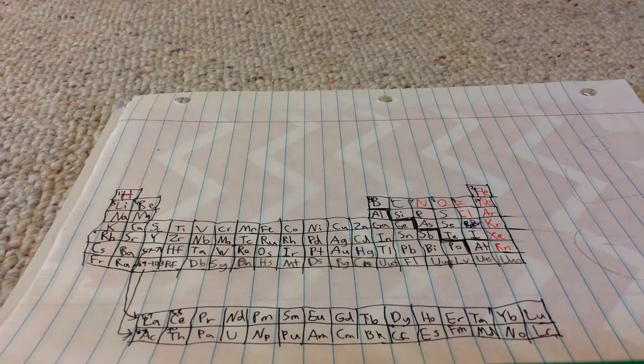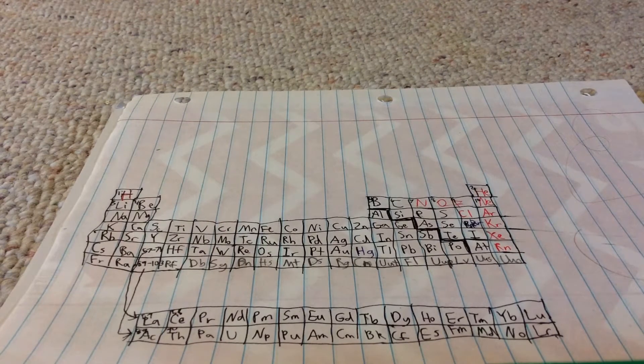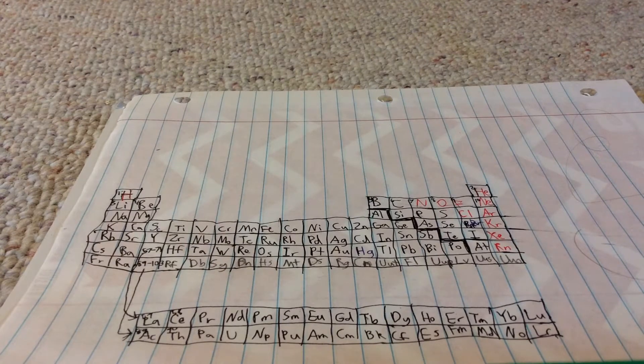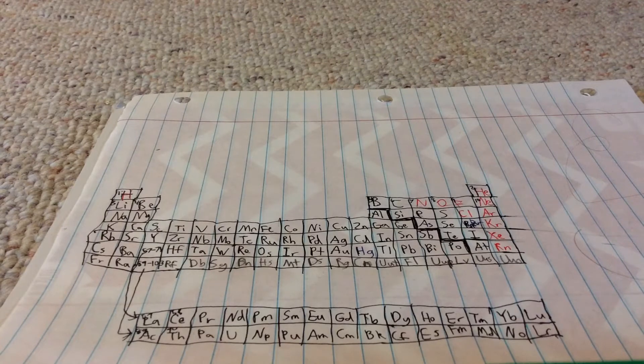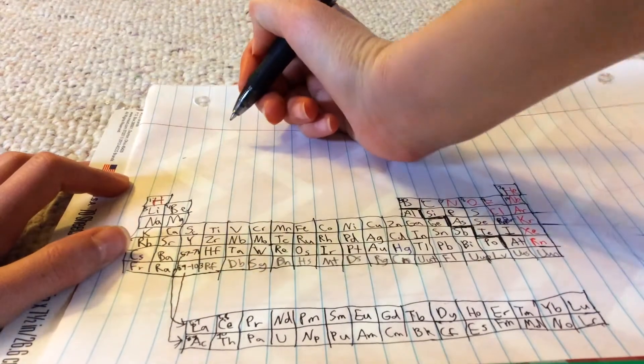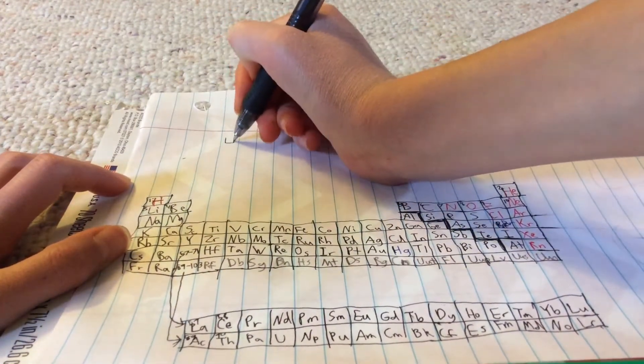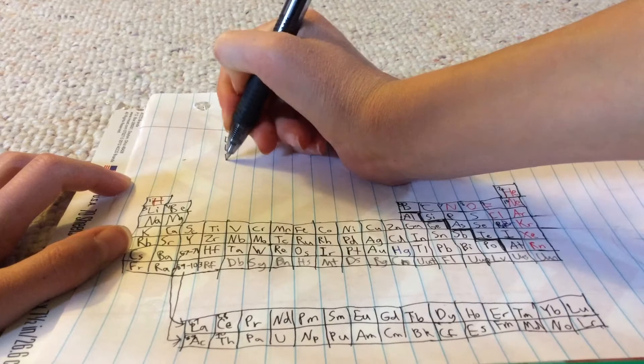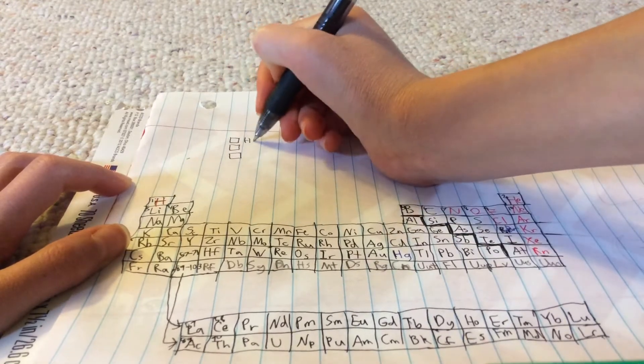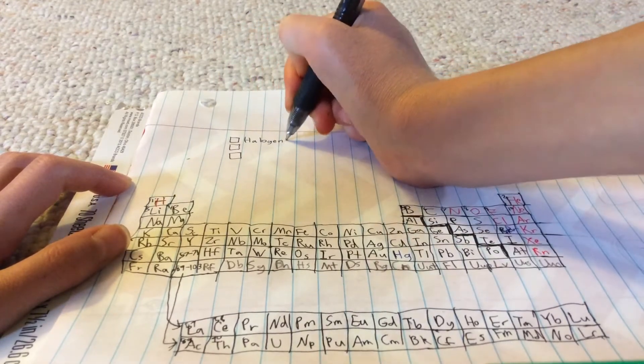We're on the final step already. What we're gonna do is we're gonna label the periodic table using different families and groups. First thing we do is make three squares right here. All of them will be for something. It's gonna be halogens.